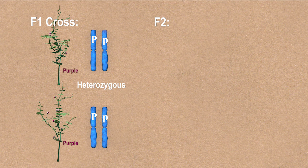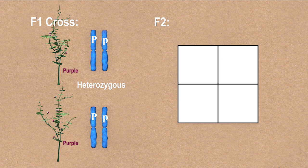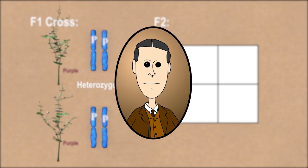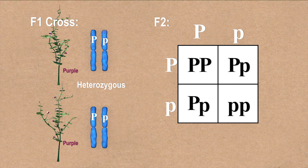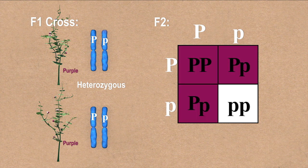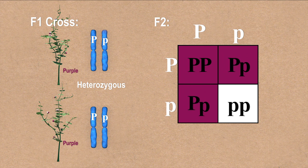All the possible combinations of alleles in the F2 generation can be predicted using a Punnett square, a prediction tool devised by Reginald Punnett in the first decade of the 20th century. In this method, we put the two versions of the gene from one parent along the top of the four-unit square, and two versions of the gene from the other parent down the side of the four-unit square. The boxes in the middle are used to predict every combination. Three of the four possible combinations would produce a dominant trait because they have at least one dominant allele, and one of the four would produce a recessive trait because it has two recessive copies.